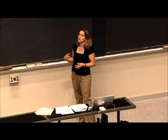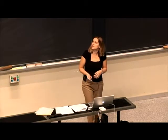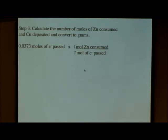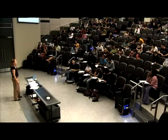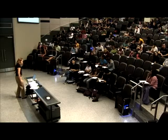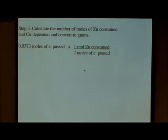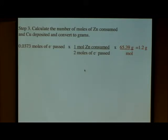How is this going to relate to the zinc consumed or the copper deposited? We know the total number of moles of electrons that passed through the system, and we have to think about: for every one mole of zinc that was consumed, how many moles of electrons went through the system? Two — right. So we're going from zinc solid to zinc plus two, and to consume one mole of zinc we need two electrons. Then we can look up the atomic weight of zinc and calculate the number of grams.